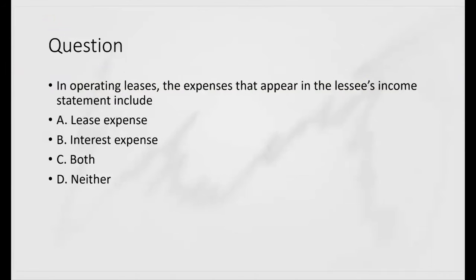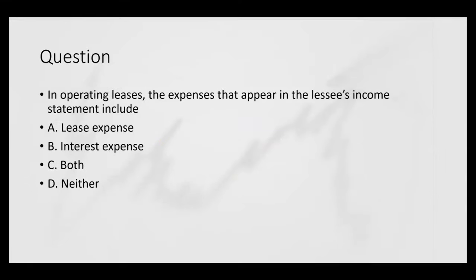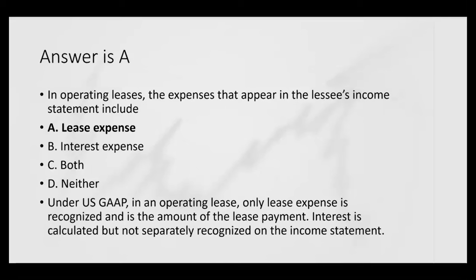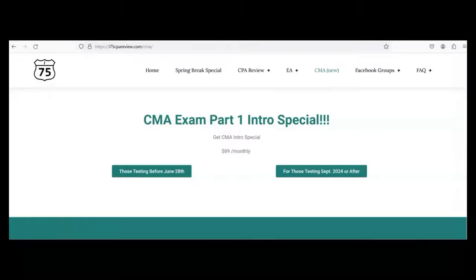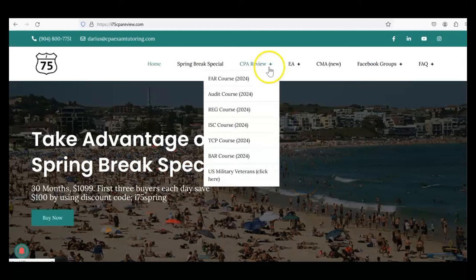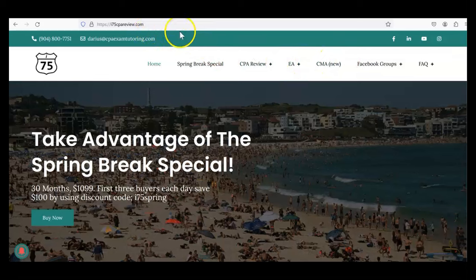Second practice question: in operating leases, the expenses appearing in the lessee's income statement include — lease expense, interest expense, both, or neither? The answer is A — only lease expense. Under US GAAP for operating leases, only lease expense is recognized on the income statement, equal to the amount of the lease payment. Interest is calculated but not separately recognized. For finance leases, the same interest is both calculated and recognized as a separate expense — but that's finance leases only.